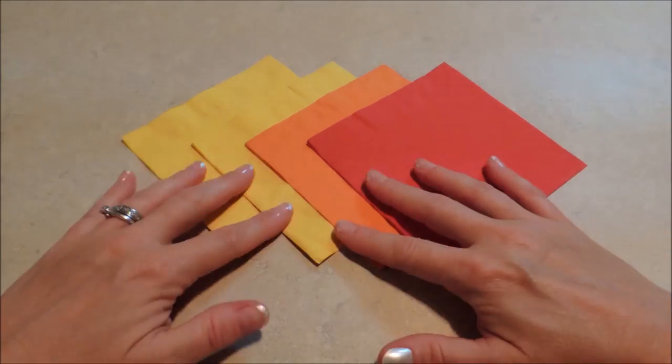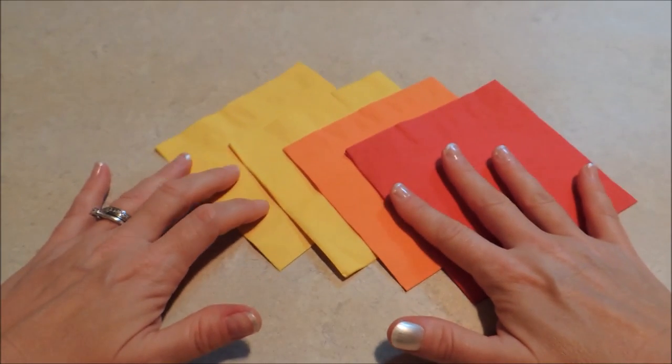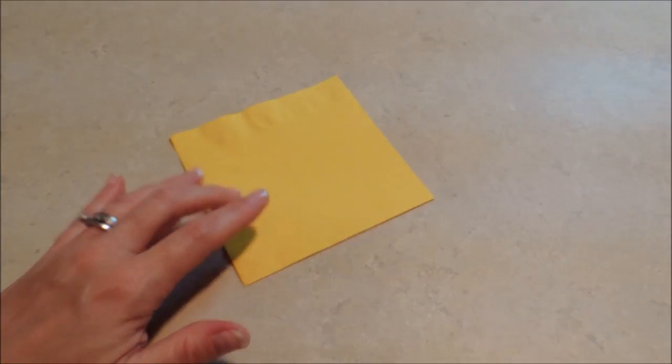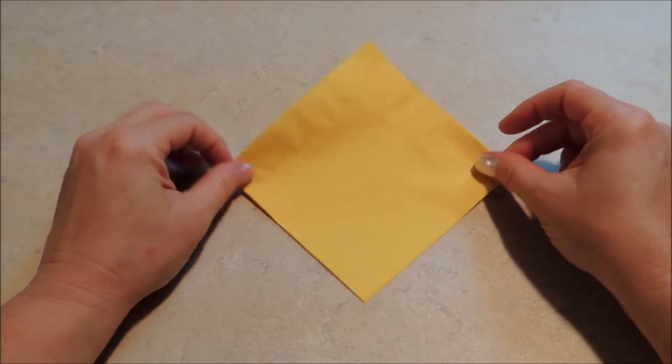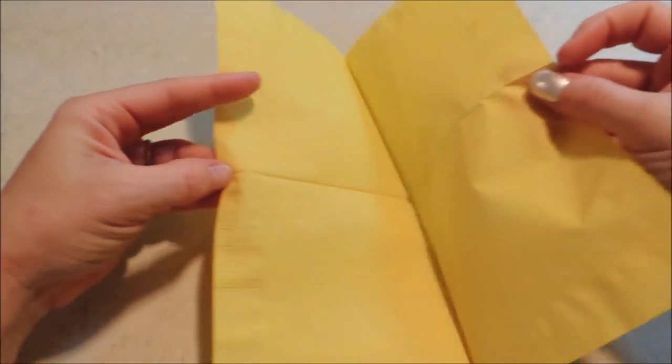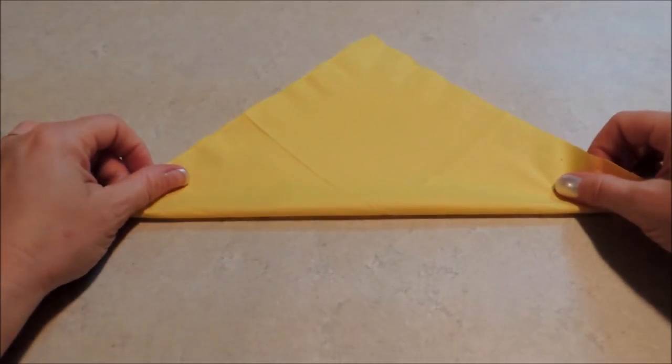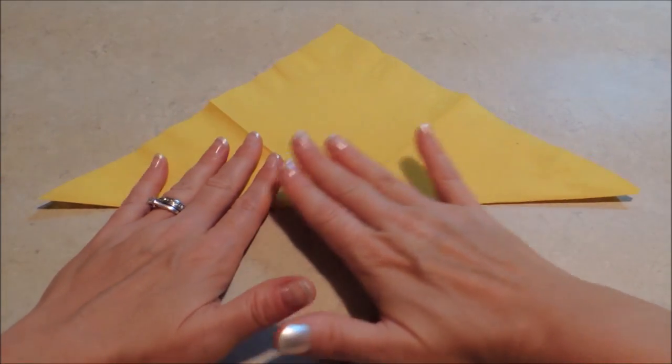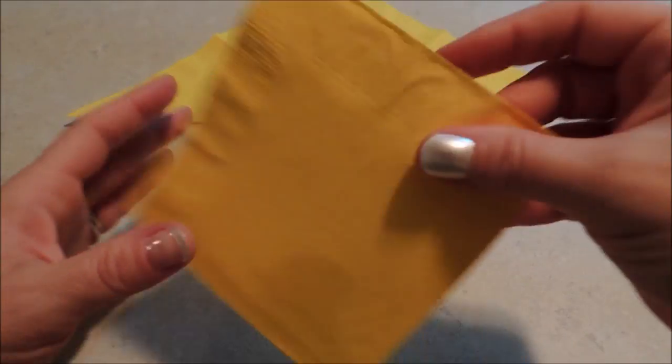To start our napkin fold, we're going to be doing these kind of similar to the fold that we did in the fireworks napkin folding video, but just a little bit different. On those, we had our napkins in the diagonal direction like a diamond. But for the campfire, we're going to open these up. And we're going to be folding them in a triangle. And we'll go ahead and do that with all of our napkins.